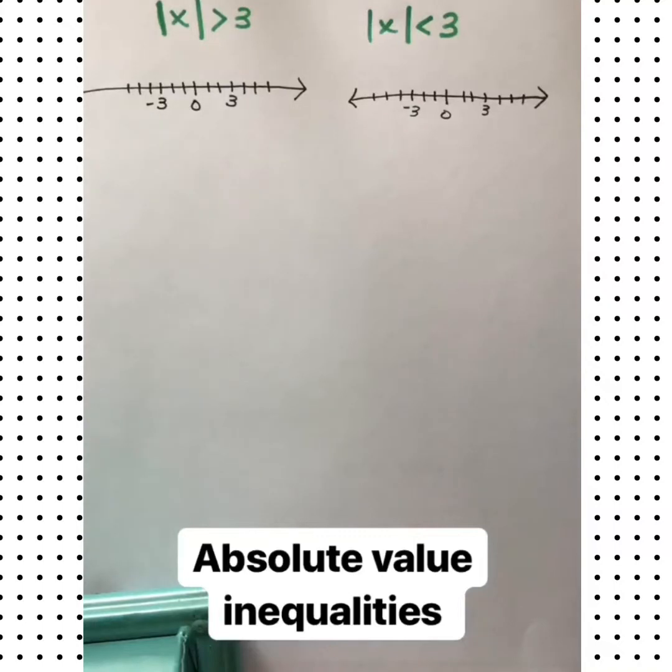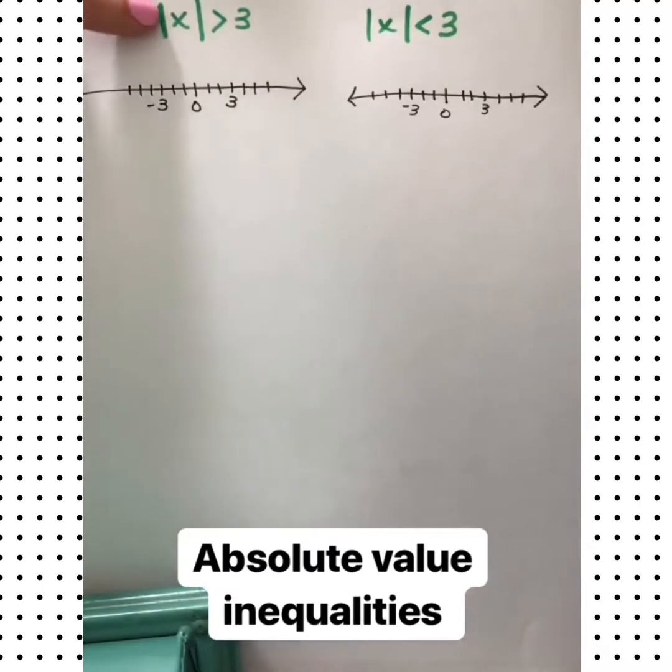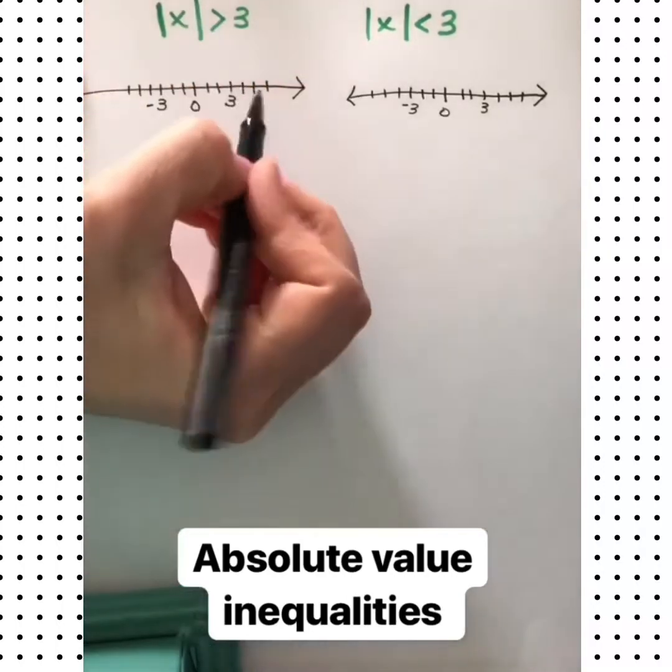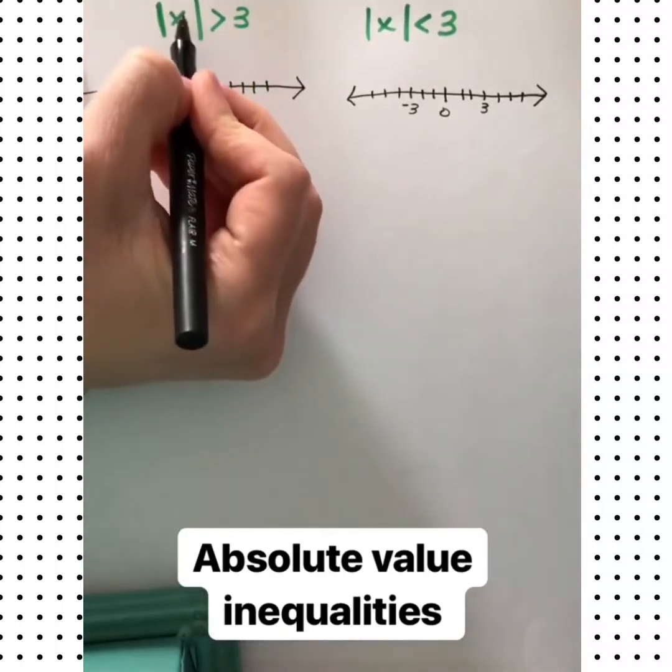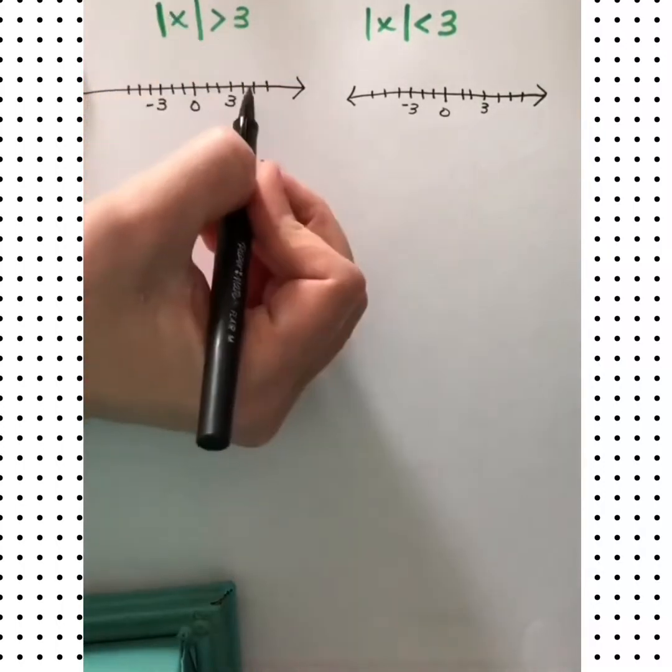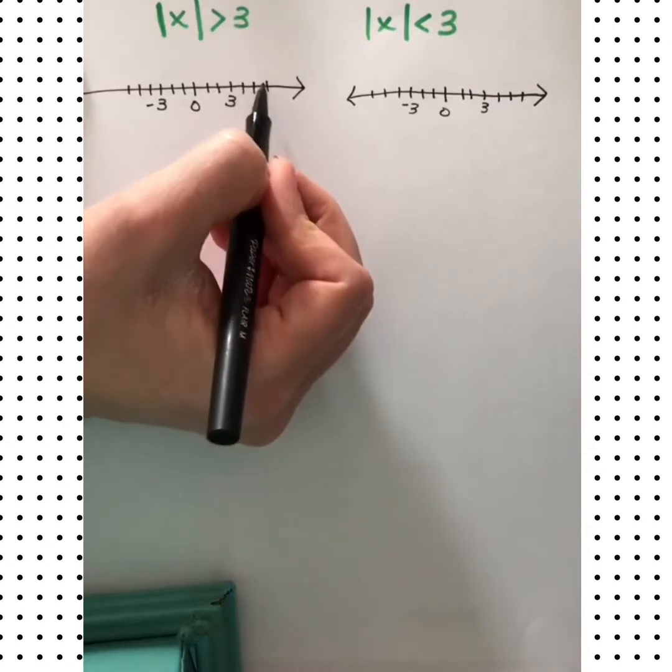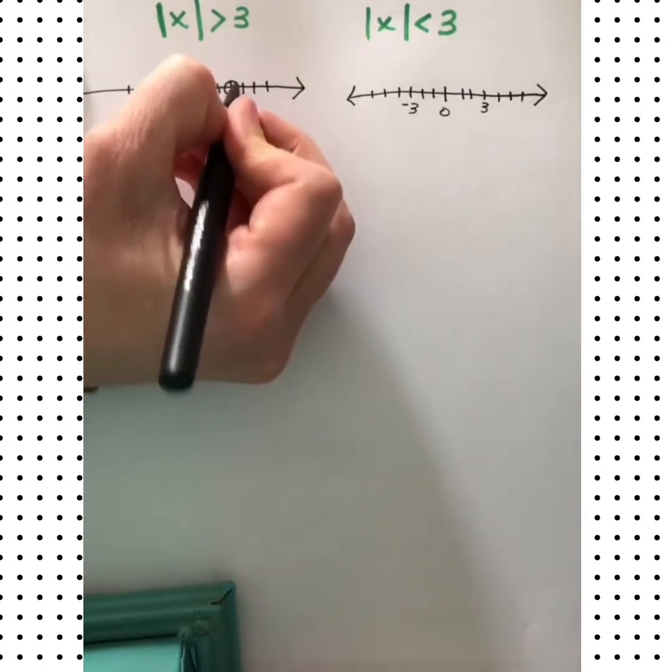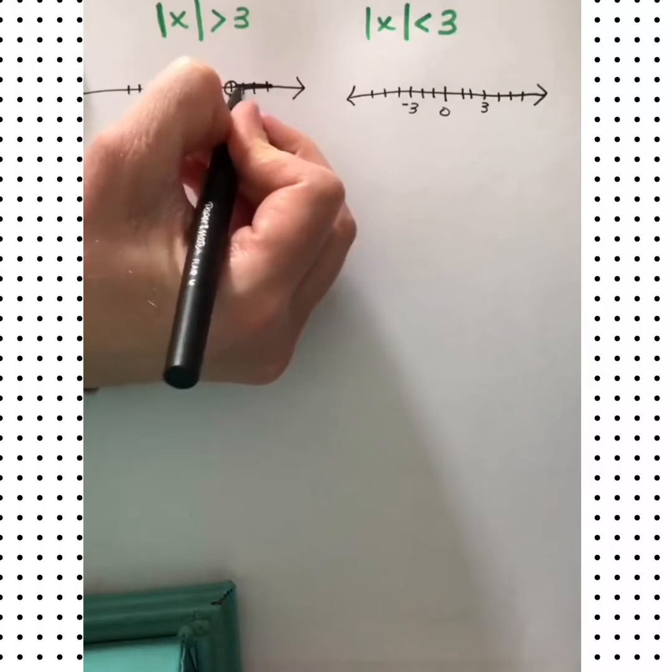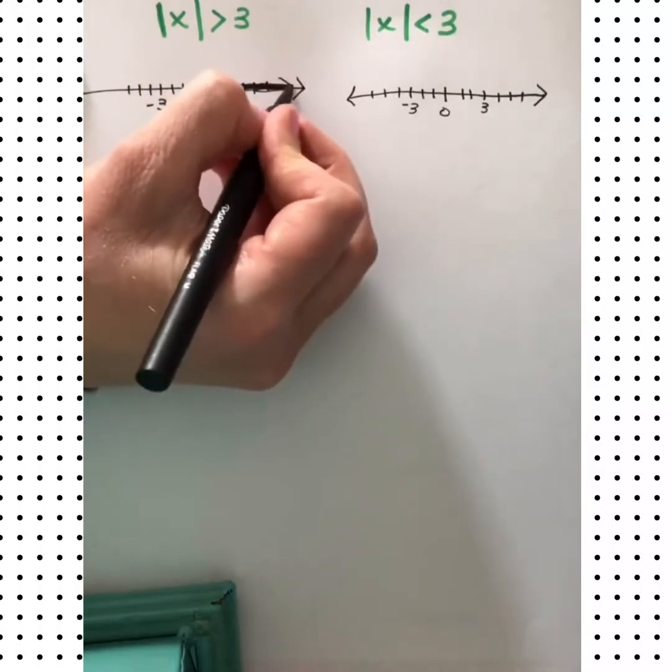Let's take a look at absolute value inequalities. Let's start here: the absolute value of x is greater than 3. Let's just think about what would work and make this true. Well let's start here, would 4 work? Is the absolute value of 4 greater than 3? Yeah. 5, 6, yeah. All these numbers that are greater than 3 are solutions. So we could shade over here.